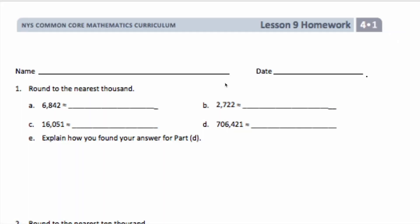For the first set of numbers, we are rounding to the nearest thousand. I want to first highlight how many thousands are in the number, and then I'll know that the number is between that number of thousands and one more. Then I'm going to look at the number to the right. Half of 1,000 is 500, so if it's more than 500, I round up. If it's less than 500, I round down.